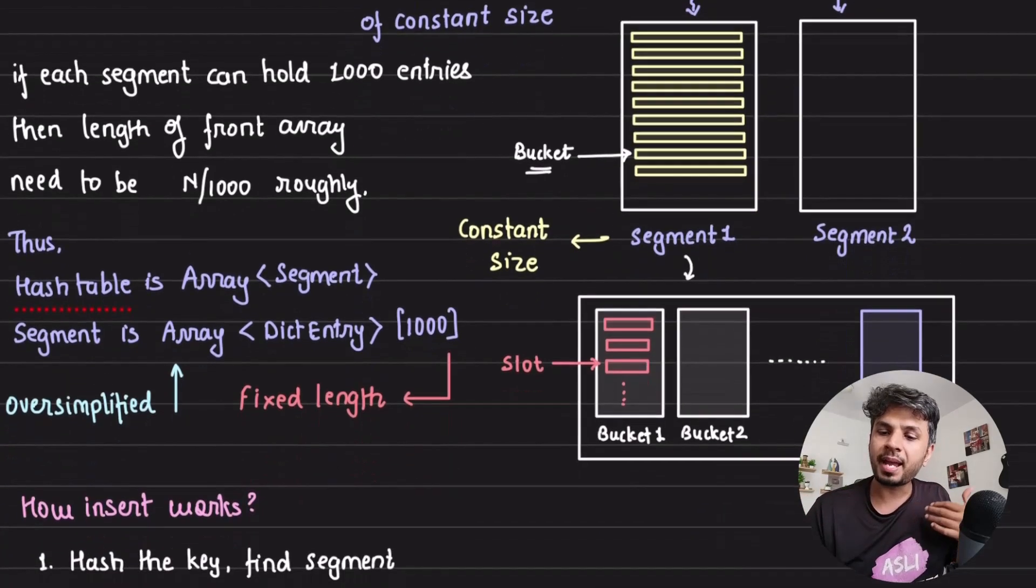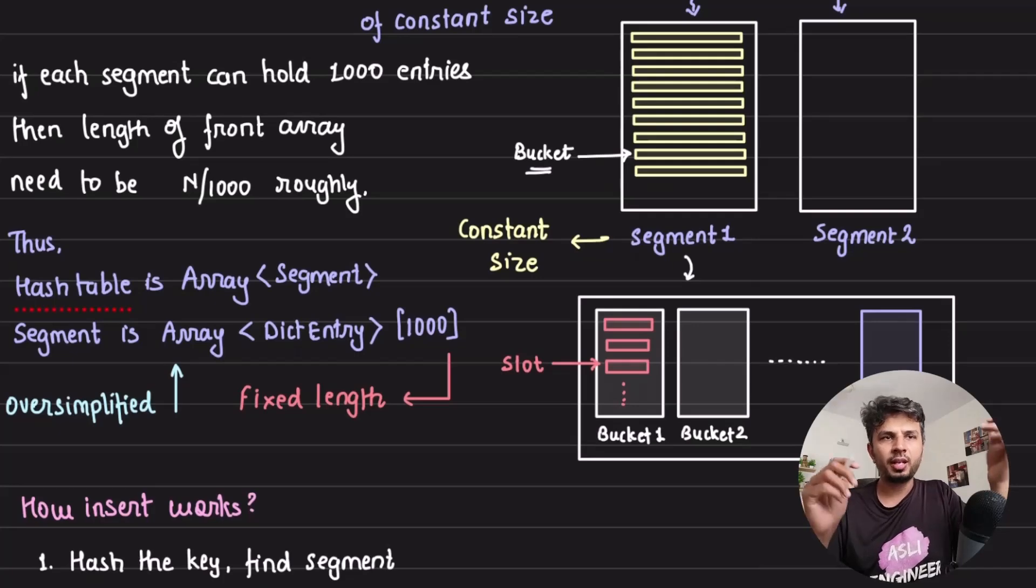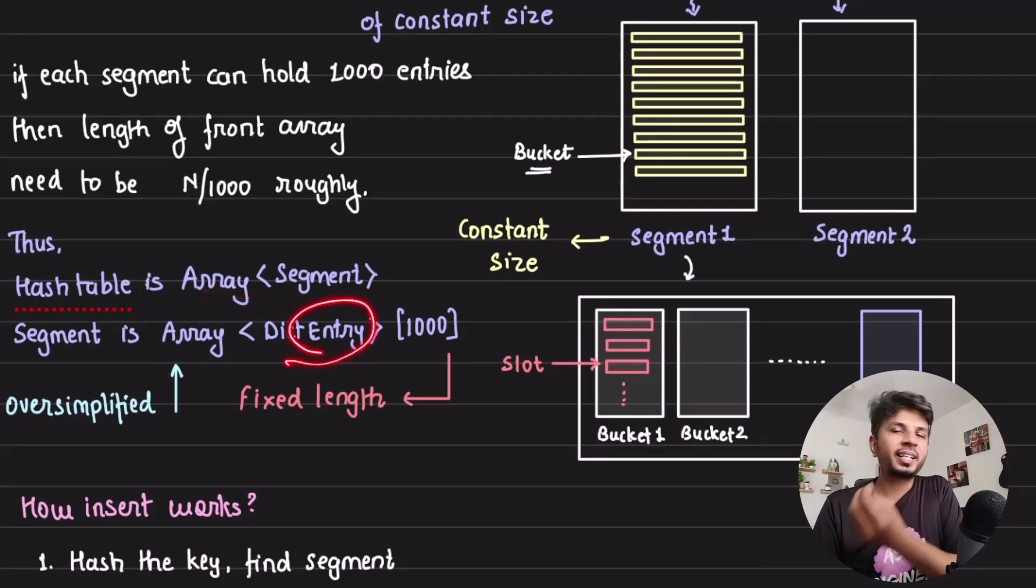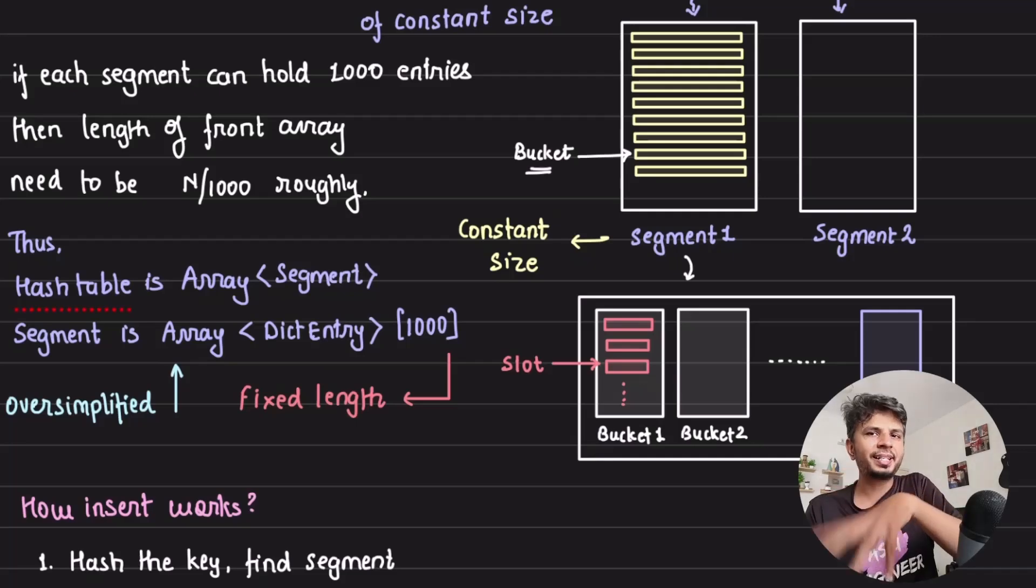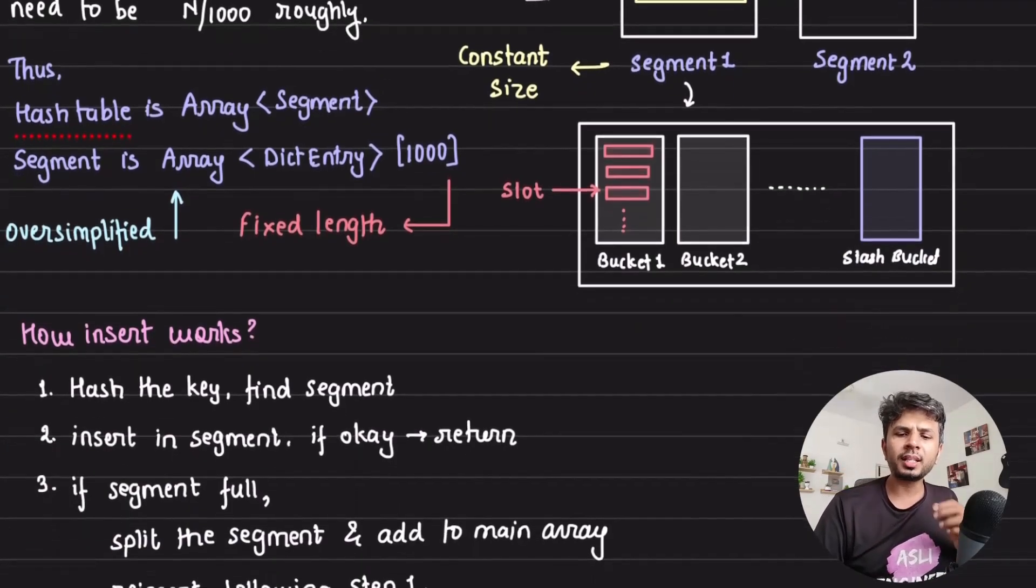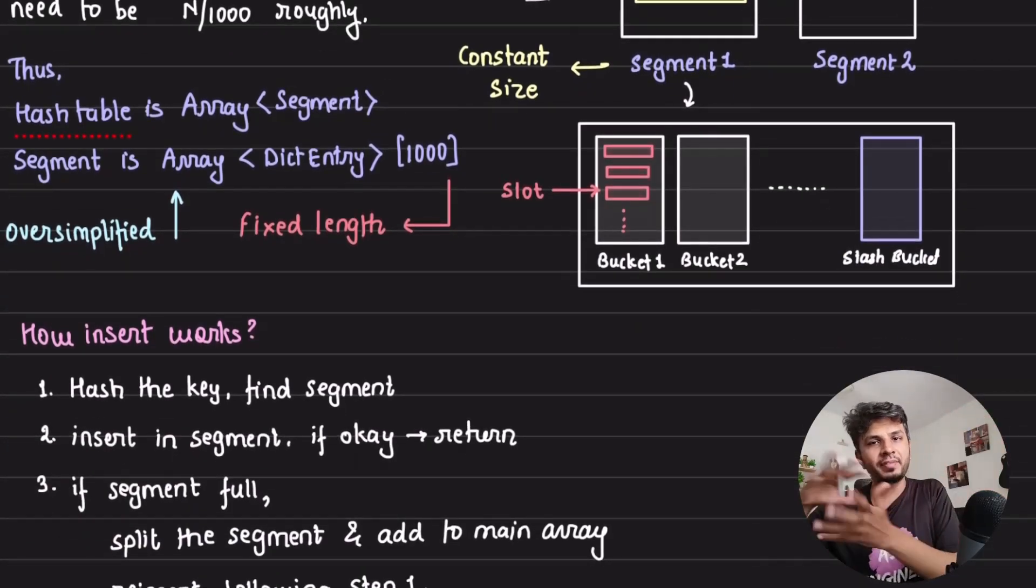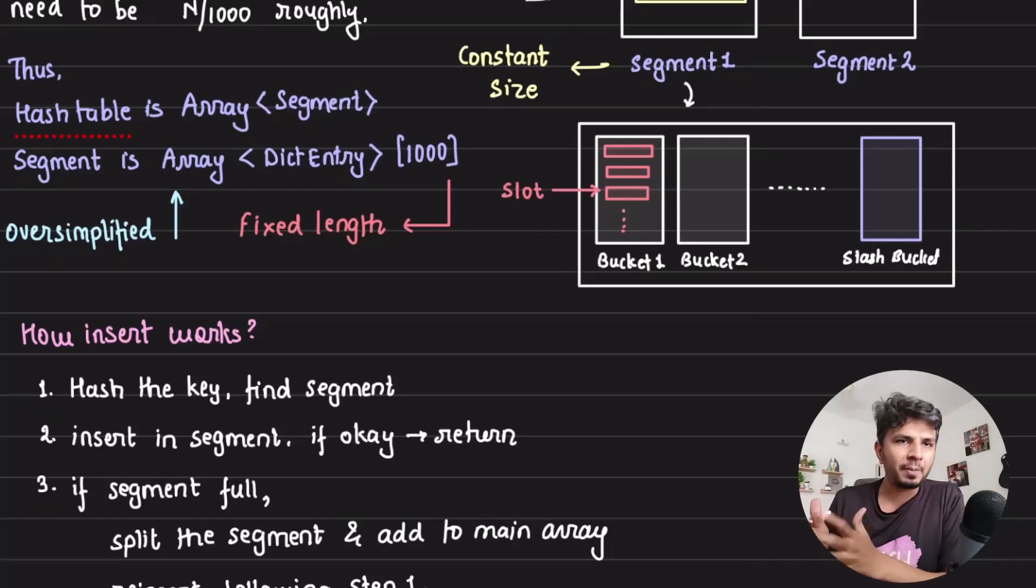Thus my dash table implementation consists of an array of segments and segment is an array of dict entries. This is an oversimplified version where we'll go into the nuances in a couple of minutes.